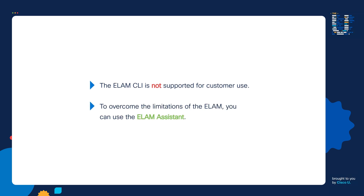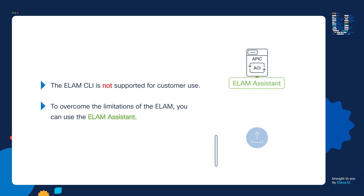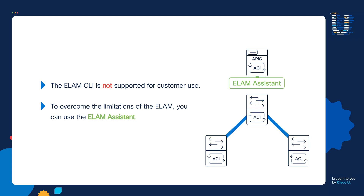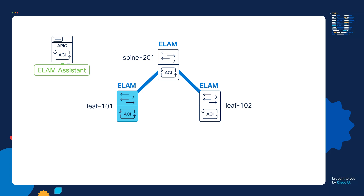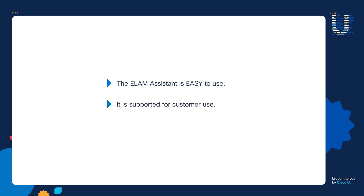To overcome the limitations of the ELAM, you can use something called the ELAM Assistant. You upload and install it on the APIC, which has visibility across all of the Nexus 9000 switches. Because of this, a benefit of the ELAM Assistant is we now have just one place to run all our ELAM captures from — the APIC. Whether I want to run a capture on leaf 101 or the other switches, I do it all from the ELAM Assistant on the APIC. Another benefit is it's easy to use, much easier than the ELAM CLI, and because of this, it's supported for customers to use.